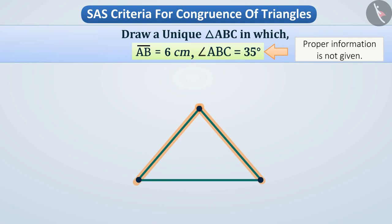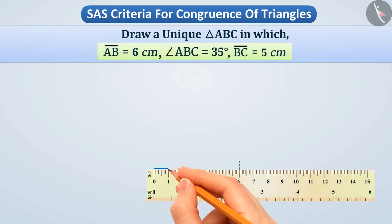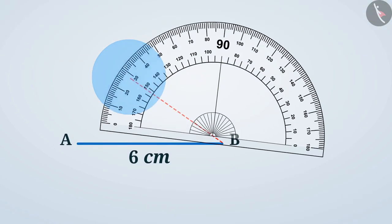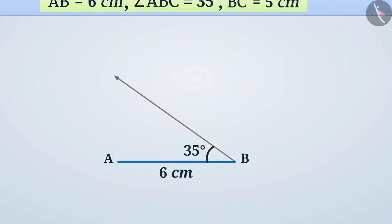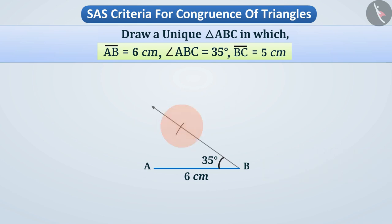But if the length of two sides and the angle between them is given, then we can draw a unique triangle. Suppose AB is equal to 6 cm, angle ABC is equal to 35 degrees, and BC is equal to 5 cm. We draw line segment AB equal to 6 cm, then use a protractor to draw angle ABC equal to 35 degrees, and draw an arc of radius 5 cm with B as center to cut the arm at point C. Then join point A to C to draw triangle ABC.